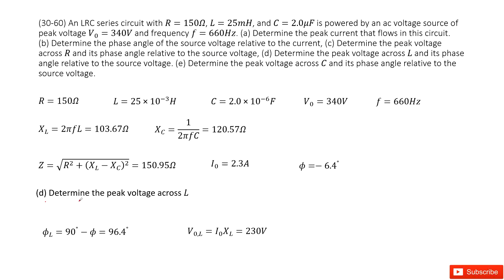Next, determine the peak voltage across L and its phase angle. The peak voltage for L equals the peak current times X_L, so we get the answer there. For the phase angle relative to the source voltage: inductance leads the current by 90 degrees, so the phase angle for L is 90° minus φ.